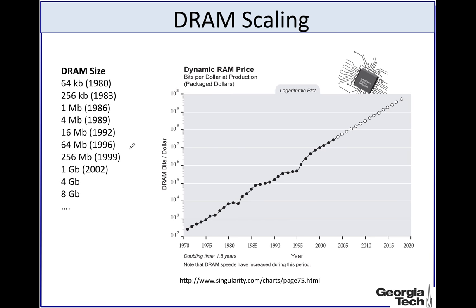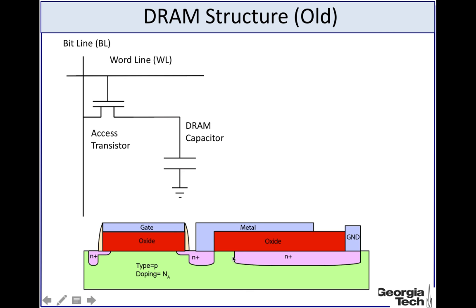In essence, DRAM has been scaling significantly. If we look at the cost-per-bit figure of merit, the cost per bit has decreased, and the number of bits you can get per dollar has also increased significantly — exponentially over time. The number of bits per dollar has actually doubled every one and a half years.